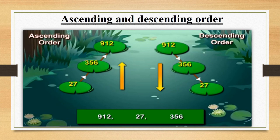Now students, here is the last example. The numbers given are 912, 27 and 356. The smallest number is 27, then 356, and the biggest number is 912. So the ascending order would be 27, 356 and 912. The descending order would be 912, 356 and 27.